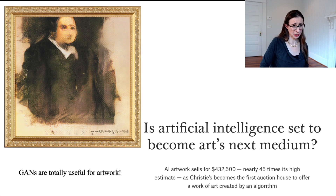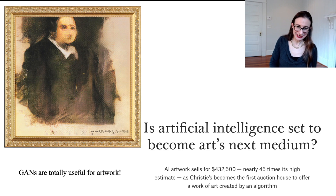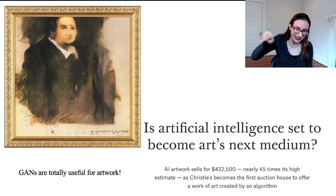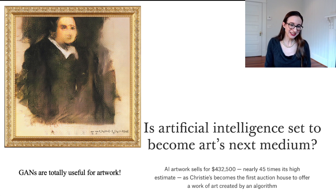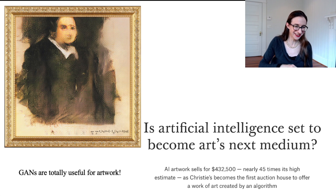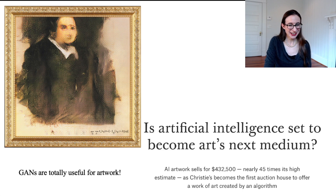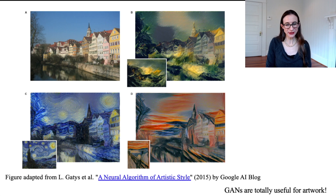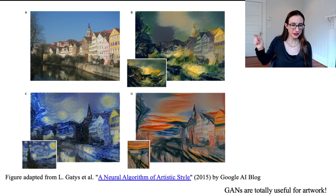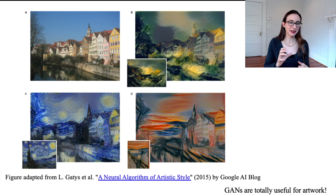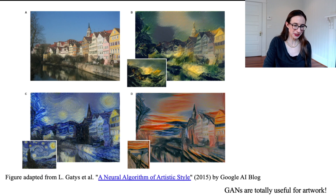GANs are really great for artwork. This piece of GAN-generated artwork — you can see the equation at the bottom — sold for $432,000 at Christie's. GANs also do a beautiful job of transferring style from one image to another. On the left is a photo, and the styles from different paintings are being transferred to it. You can see how lovely the pictures look.